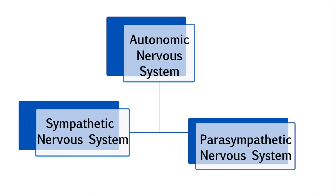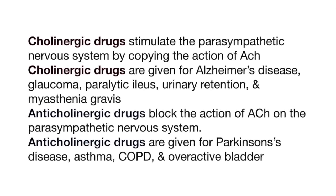Let's go over a quick review. The autonomic nervous system is broken down into the sympathetic and parasympathetic nervous system. The sympathetic nervous system is our fight-or-flight response, or adrenergic, and the parasympathetic nervous system is our rest and digest response, or cholinergic, which has been our focus for this lesson. Cholinergic drugs stimulate the parasympathetic nervous system by copying the action of acetylcholine, and are given for Alzheimer's disease, glaucoma, paralytic ileus, urinary retention, and myasthenia gravis. Anticholinergic drugs block the action of acetylcholine on the parasympathetic nervous system, and are given for Parkinson's disease, asthma, COPD, and overactive bladder. Thank you for watching this video tutorial on cholinergic and anticholinergic drugs and their effects on the parasympathetic nervous system.